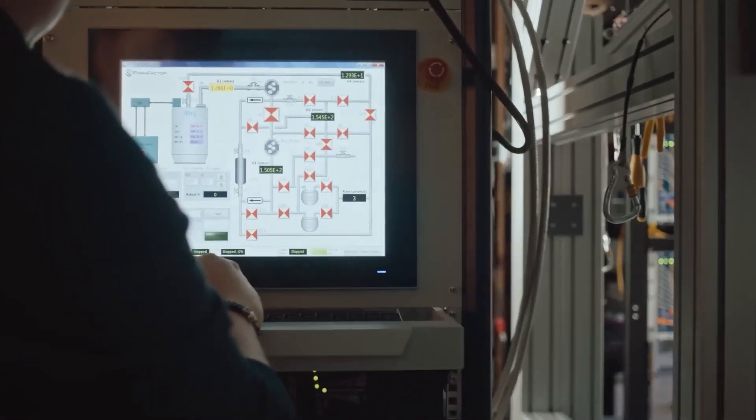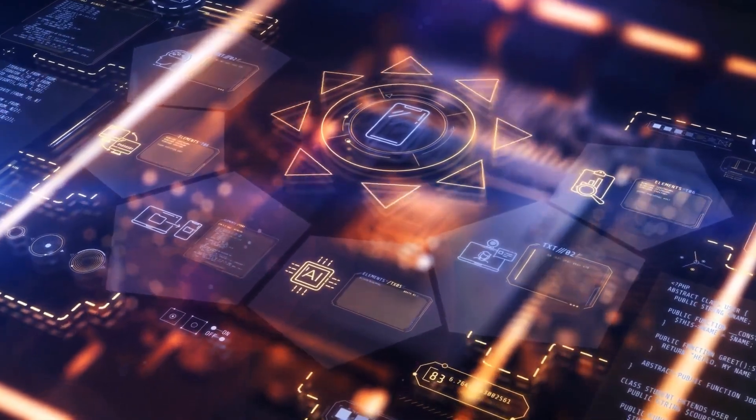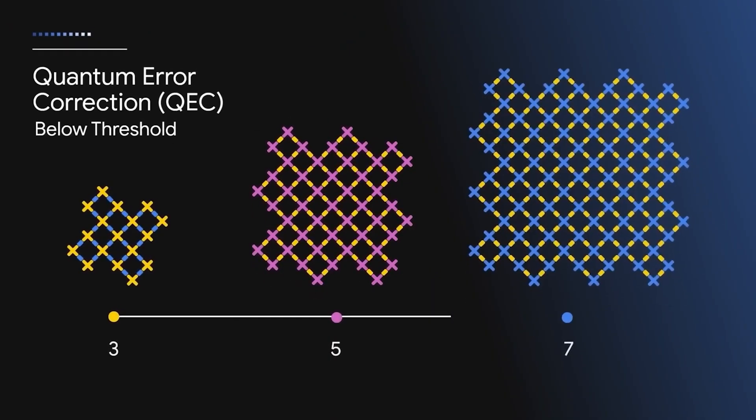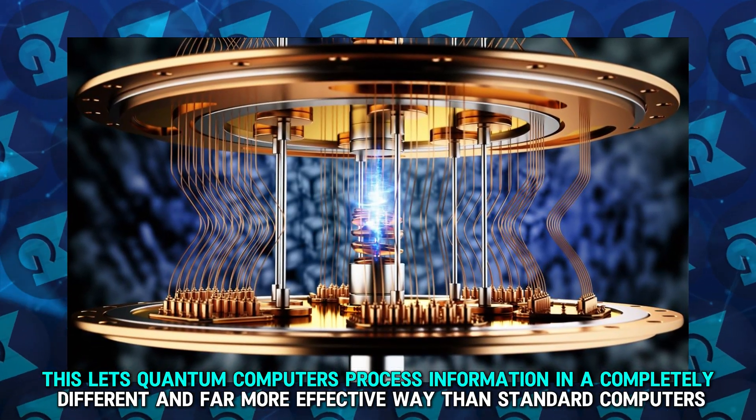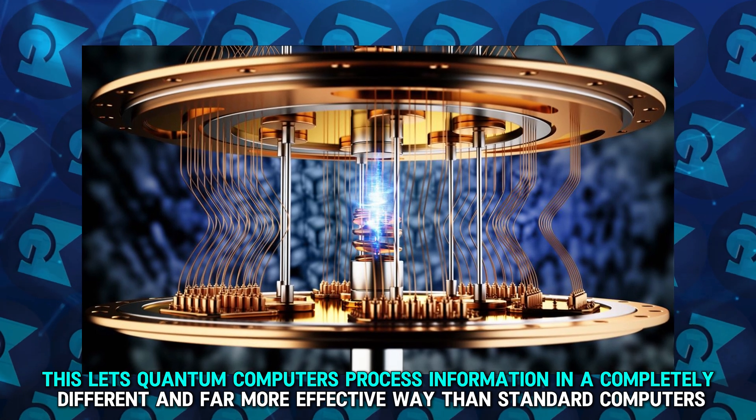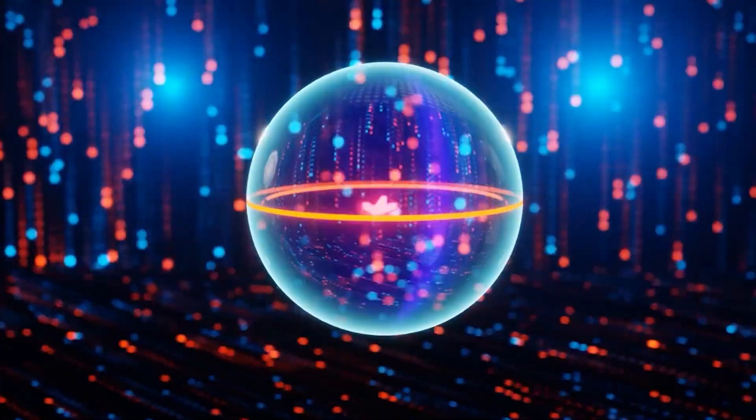This ability is enhanced by another quantum property called entanglement, where the state of one qubit can influence another no matter the distance between them. This lets quantum computers process information in a completely different and far more effective way than standard computers. Yet quantum computers aren't perfect.